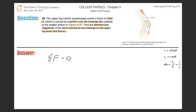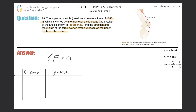Anytime you have forces in a problem pointing in different directions, it is best to use a component table. The component table organizes your thoughts — that's all it does. So let's create our component table: here we have our x-components of our vectors, and here we'll have the y-components. This column will represent the forces themselves.